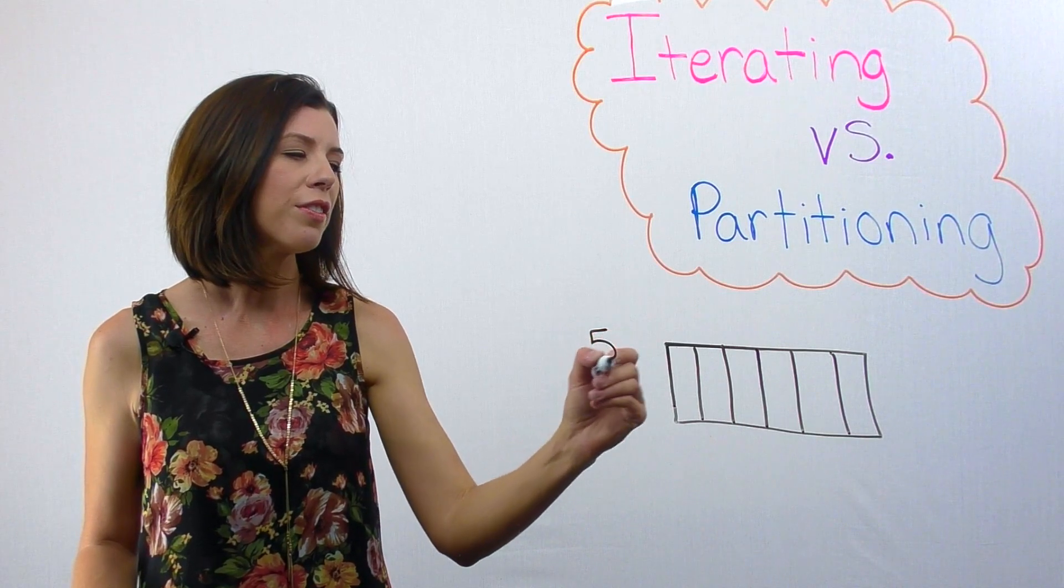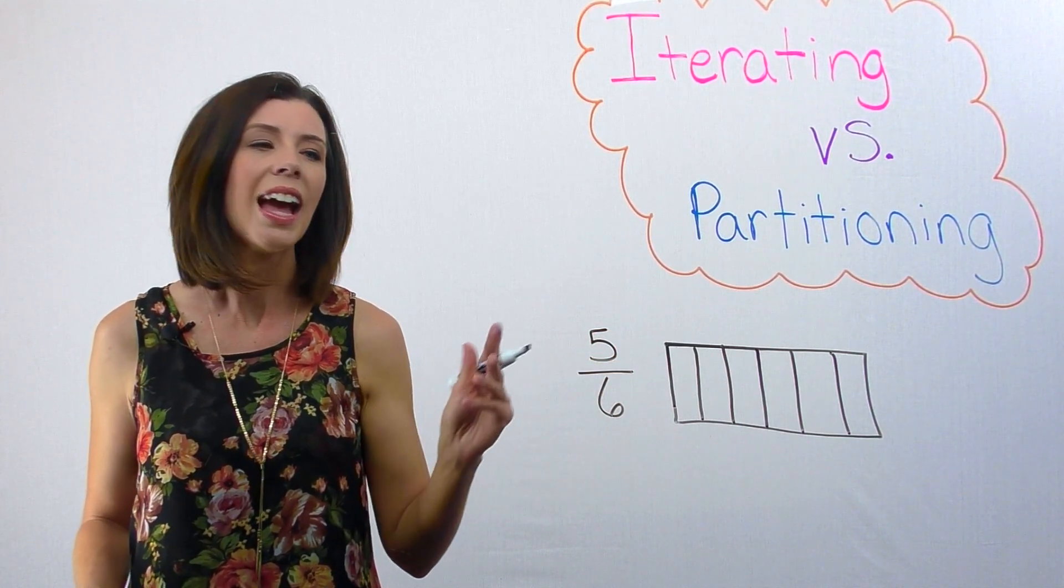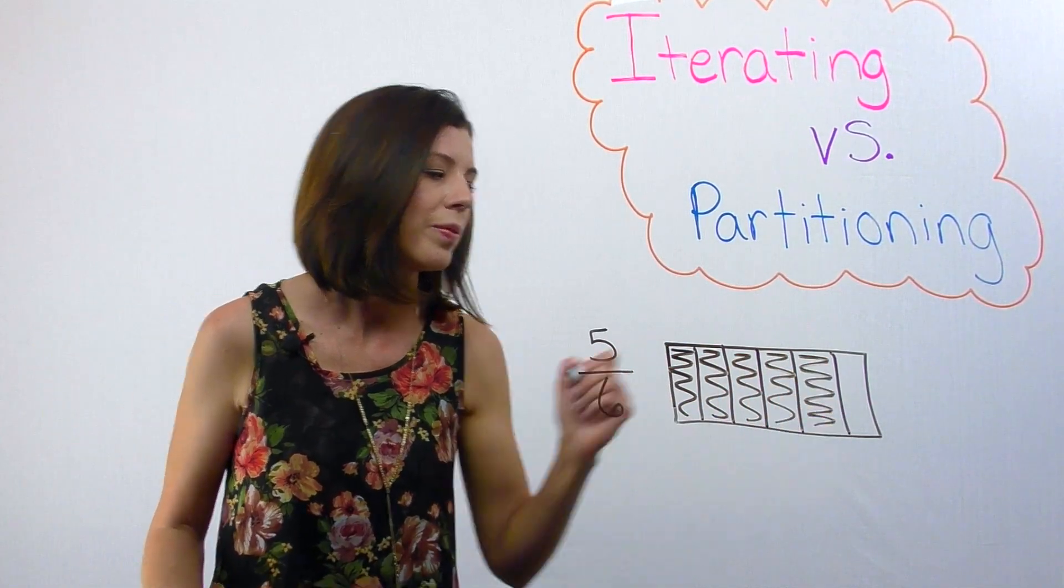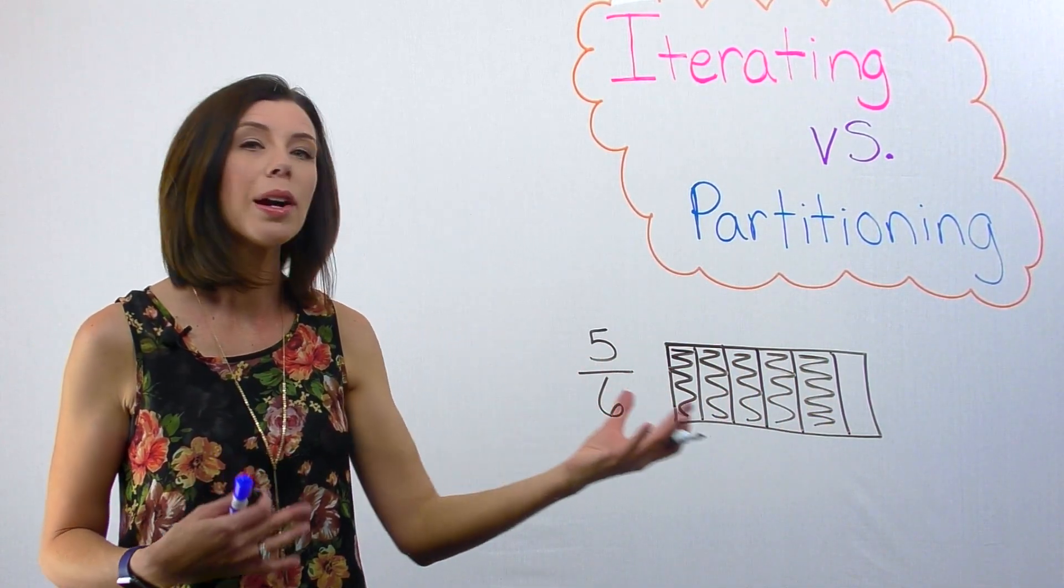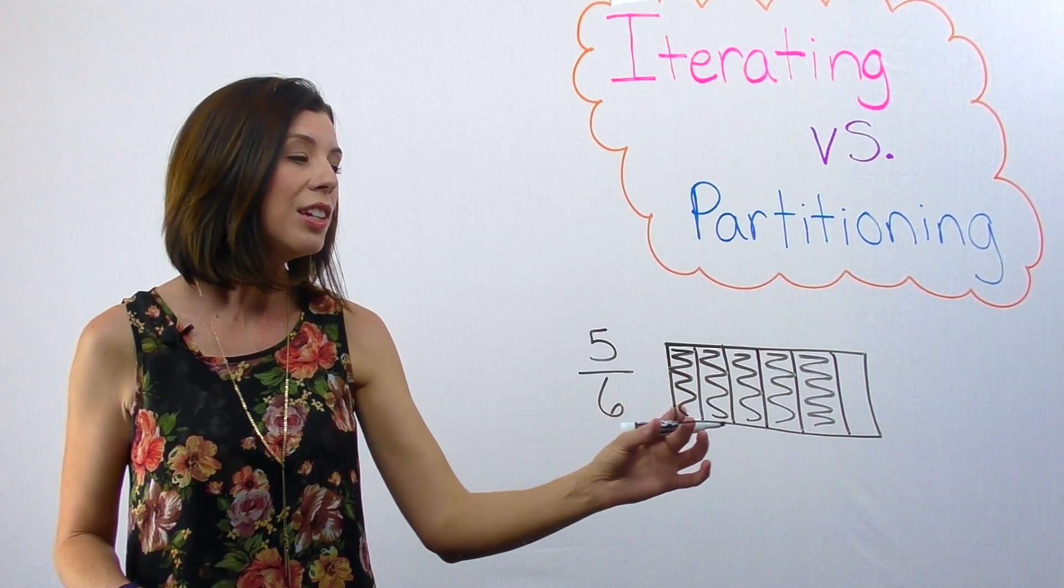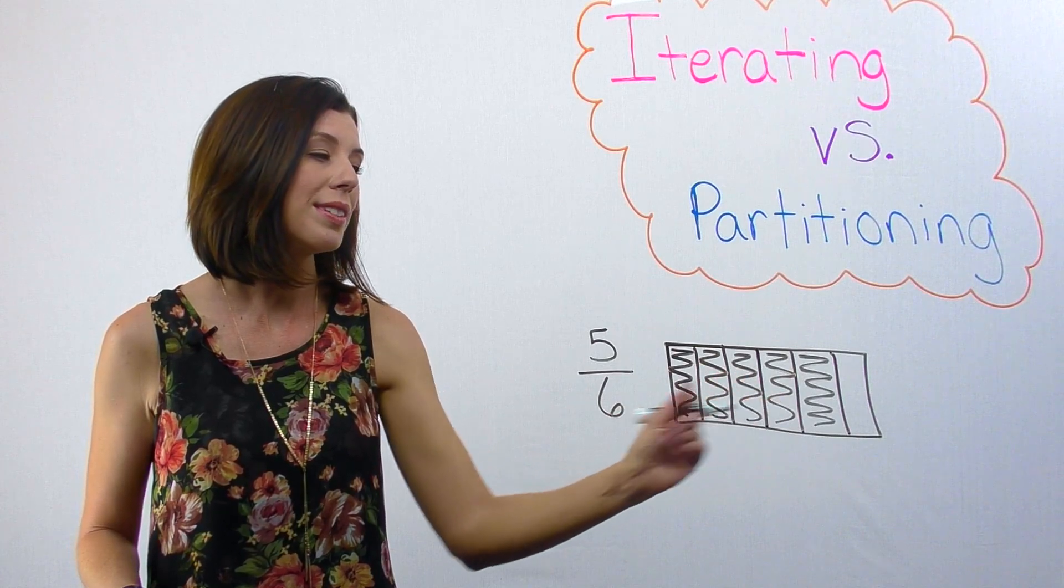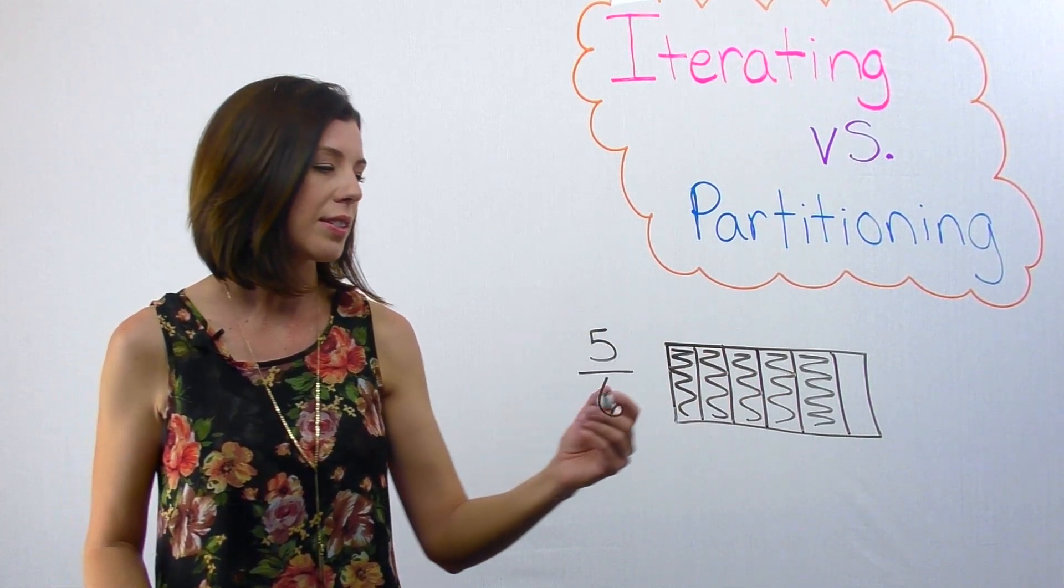Since I'm trying to find the fraction 5/6, I can shade in five pieces of this. What I have just done is I have partitioned my whole into sixths, or six copies of 1/6, and then I've shaded in five of those sixths.